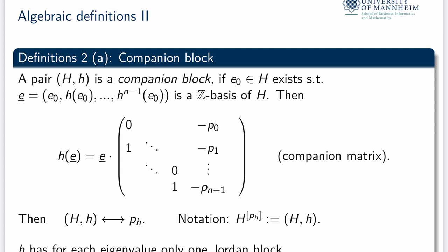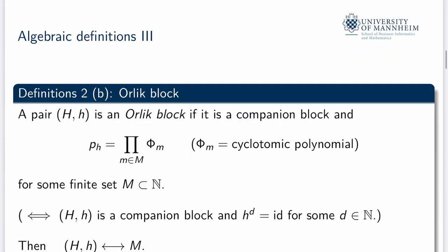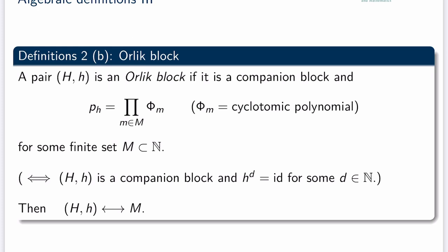Therefore the following notation is justified: H^{p_h} in square brackets denotes such a companion block for a given characteristic polynomial. In this situation the automorphism has for each eigenvalue only one Jordan block. Such a pair is called an Orlik block if it is a companion block and the characteristic polynomial is a product of cyclotomic polynomials each with multiplicity one — which holds if and only if the automorphism has finite order.